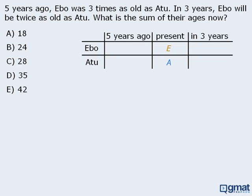Now let's complete the column concerning the ages 5 years ago. If Ibo's present age is E, then his age 5 years ago was E-5. Similarly, if Attu's present age is A, then his age 5 years ago was A-5. We can apply similar logic to the column concerning their ages 3 years in the future. In 3 years, Ibo's age will be E+3, and Attu's age will be A+3.